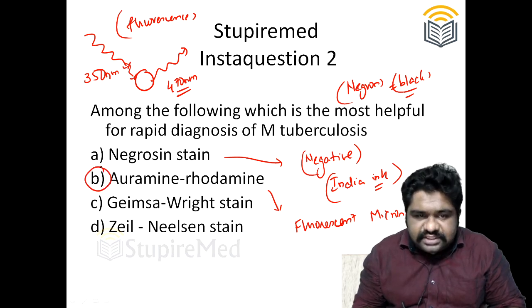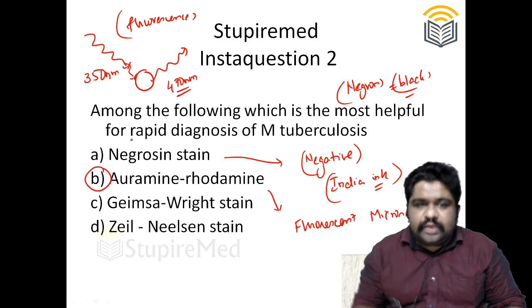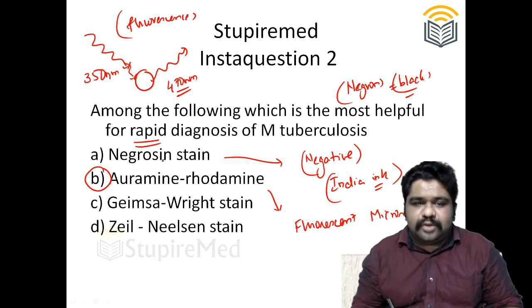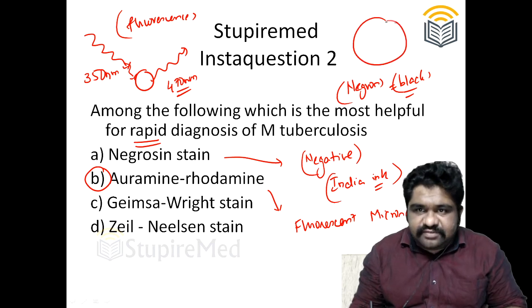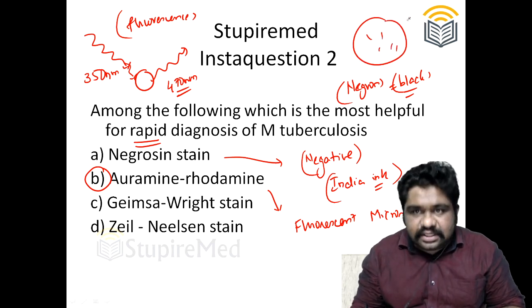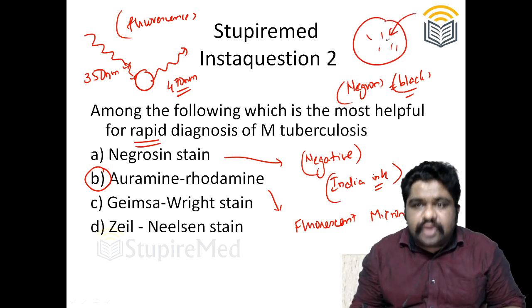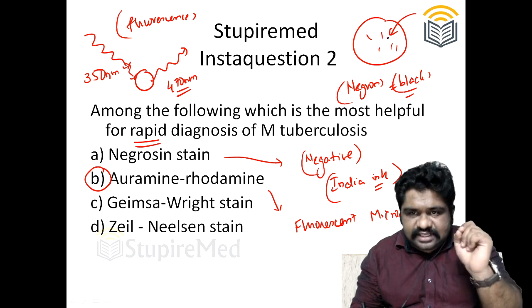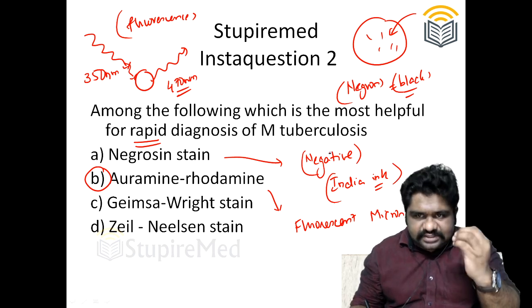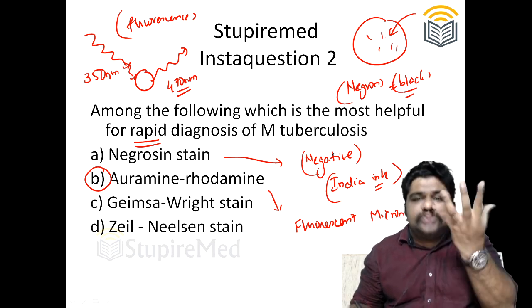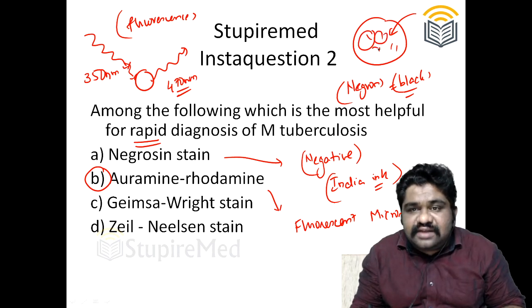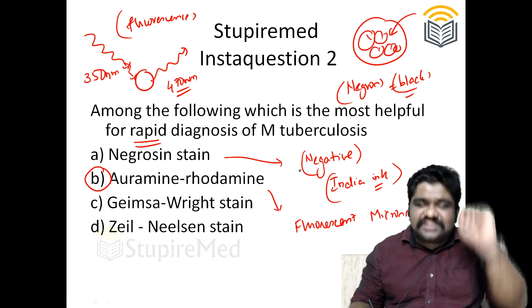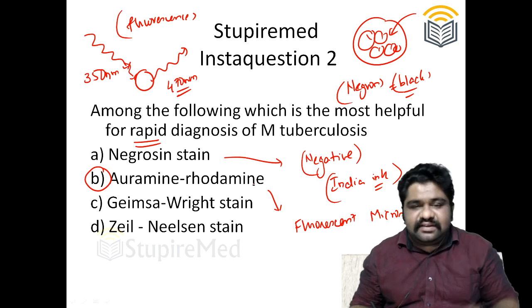The correct answer is auramine rhodamine staining, which is capable of giving you a rapid diagnosis of M. tuberculosis. Why? If M. tuberculosis is present, the moment the stain touches the organism, it instantly glows like a flower. You will be able to see it very clearly and identify every single bacillus very clearly.